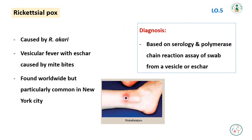Rickettsial Pox is caused by Rickettsia akari, presenting as a vascular fever with eschar caused by mite bites. It is found worldwide but is particularly common in New York City. Diagnosis is based on serology and polymerase chain reaction assay of swabs from vesicles or eschar.